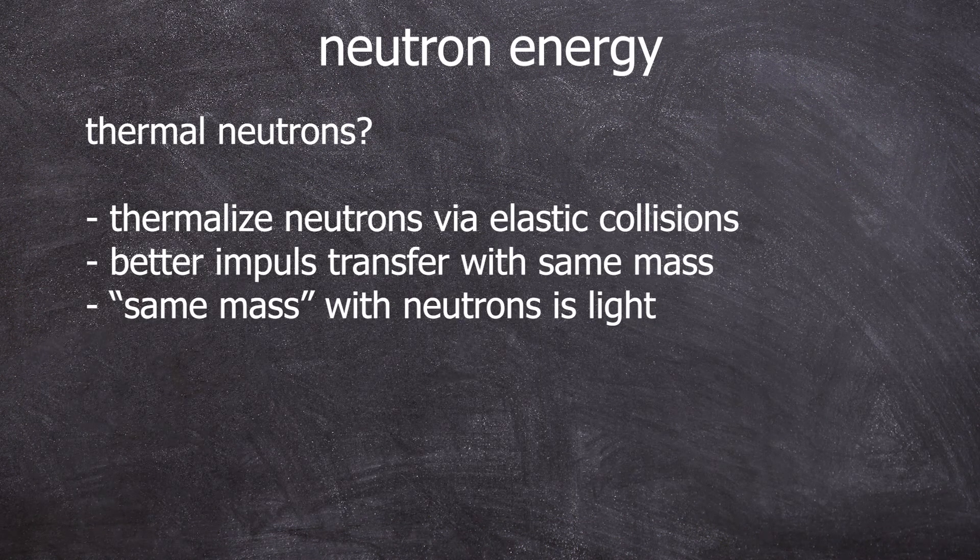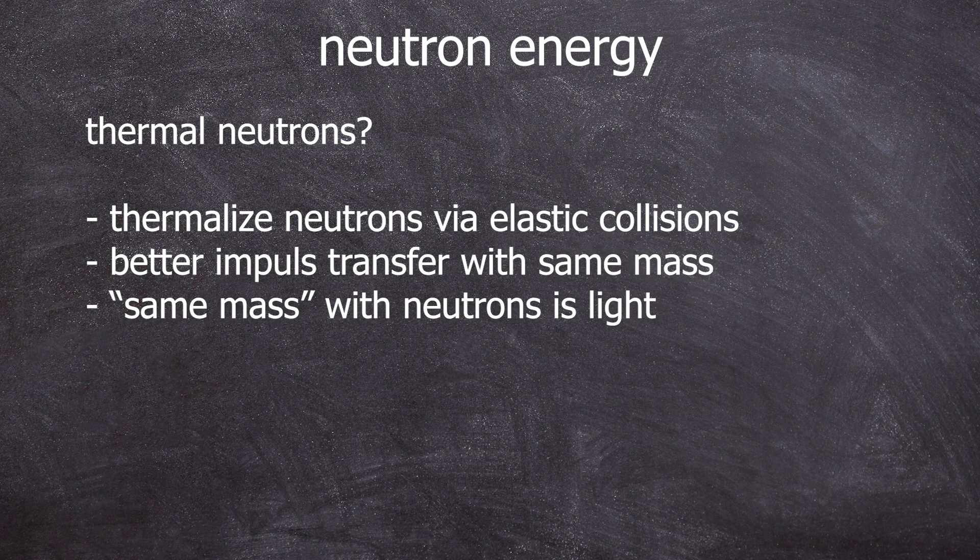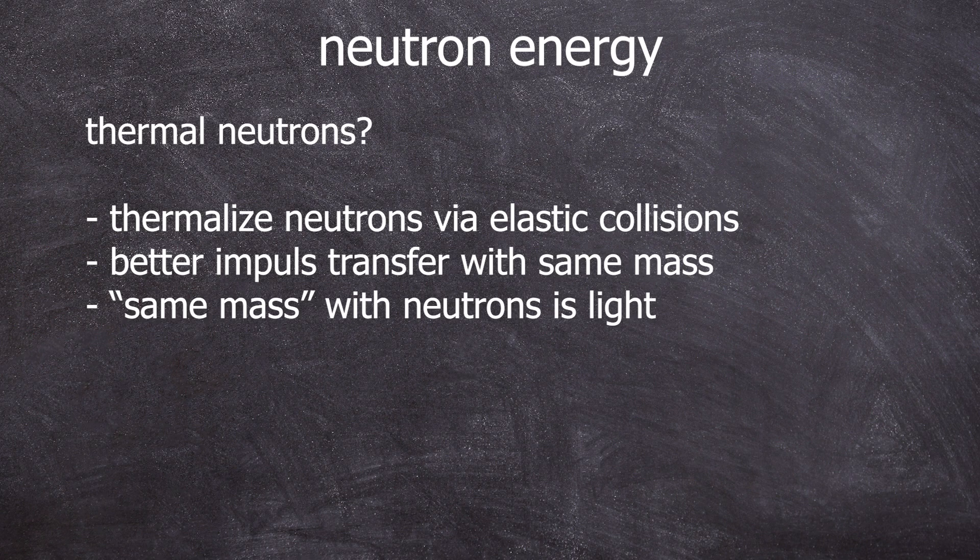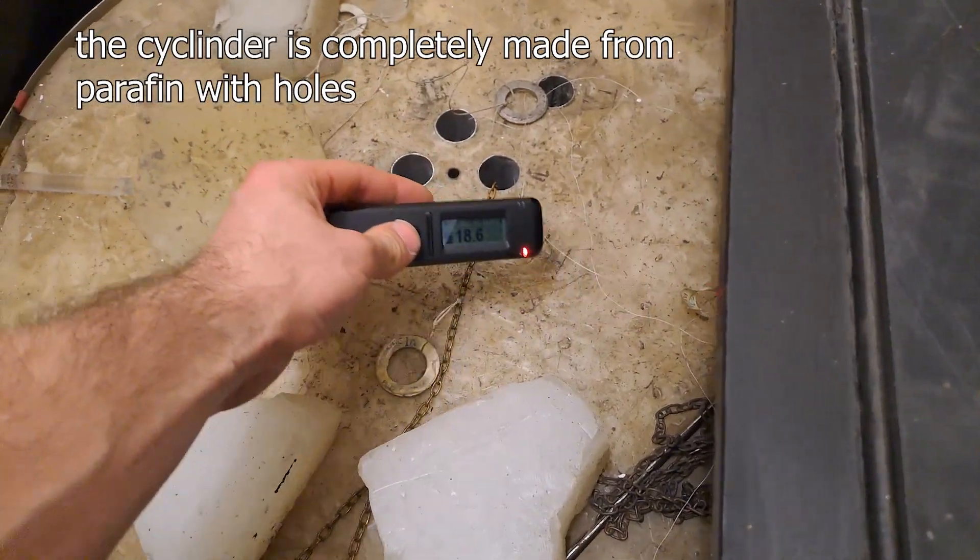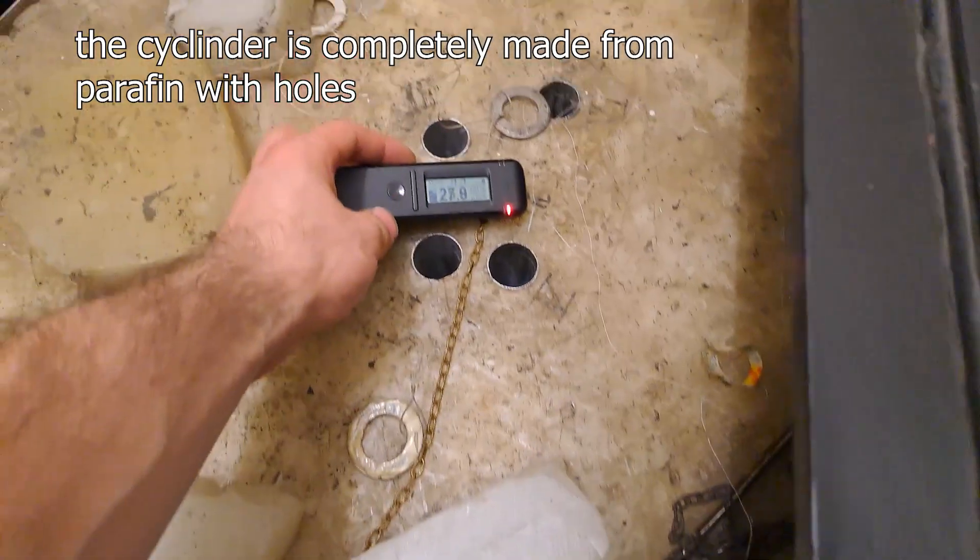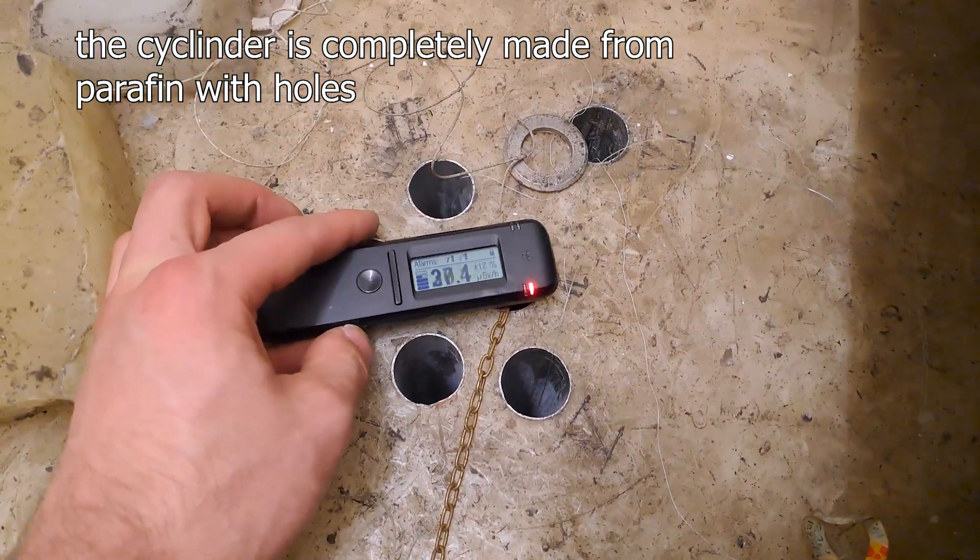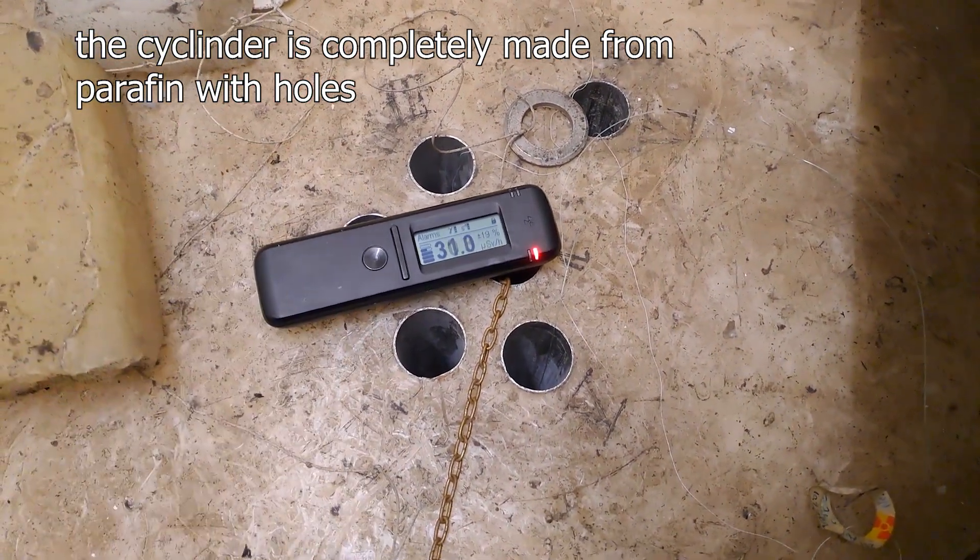And how would you slow these fast neutrons produced by the alpha-N reactions down? Through elastic collisions, ideally with a light atom, because the momentum transferred is better. And the lightest atom is the hydrogen atom. This is why we use paraffin, which essentially is a solid collection of hydrogen atoms, consisting also of carbon-hydrogen chains.